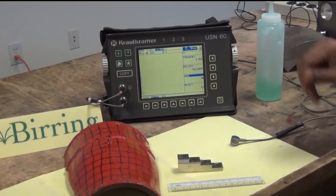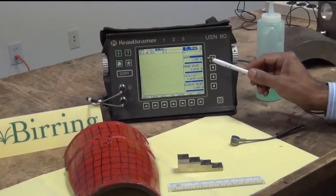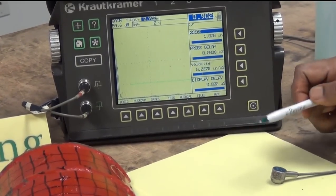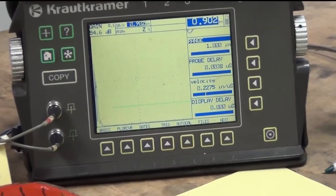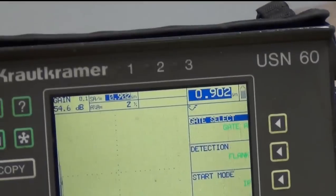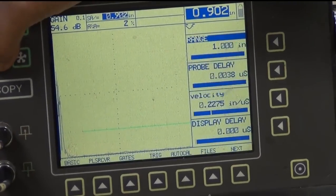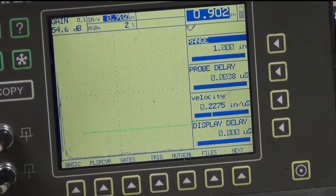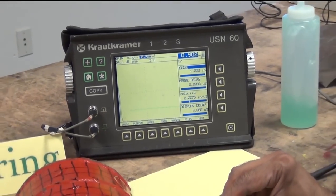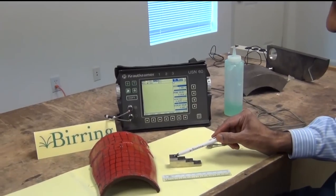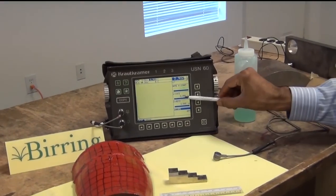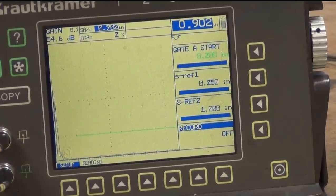Now to start we will set the probe delay to be about zero, velocity approximately 0.22 to 0.23, and I set up the gate to about 20% level. The gate mode should be on the flank, and flank means that it will pick up the first arrival signal. Now in order to do the calibration we will select two thicknesses from the step block, and to cover the range of this pipe I would select 0.25 inch step and one inch step. So in order to do that we go to AutoCal, select 0.25 here and 1.0 inch here, and now I am ready to do the calibration.